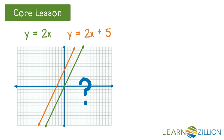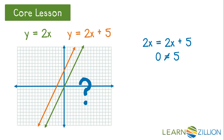Let's set up an equation using the two expressions that equal y. This says twice a number is equal to the sum of twice a number and 5. When we solve the equation, we see that 0 does not equal 5. It appears that there is no solution to this system of equations. This makes sense, seeing how there are no points of intersection for the lines we drew from the equations.